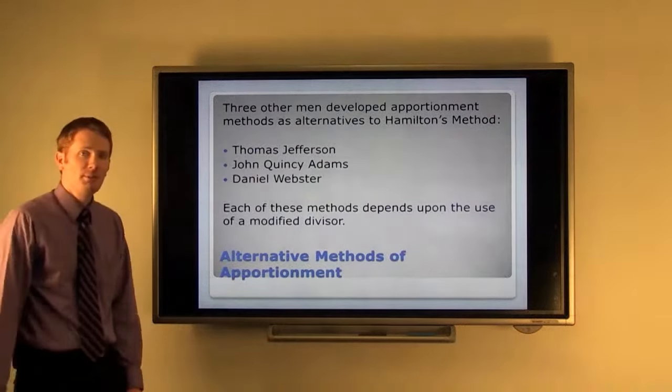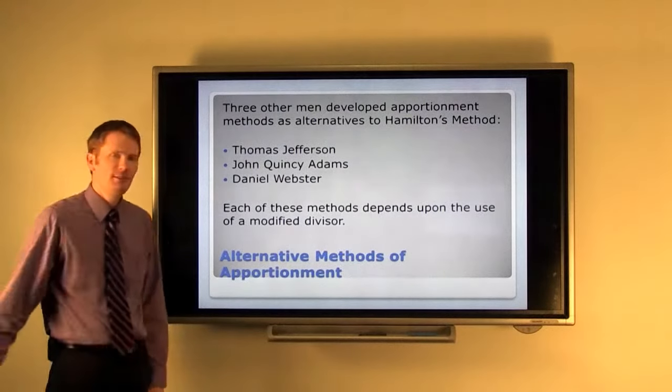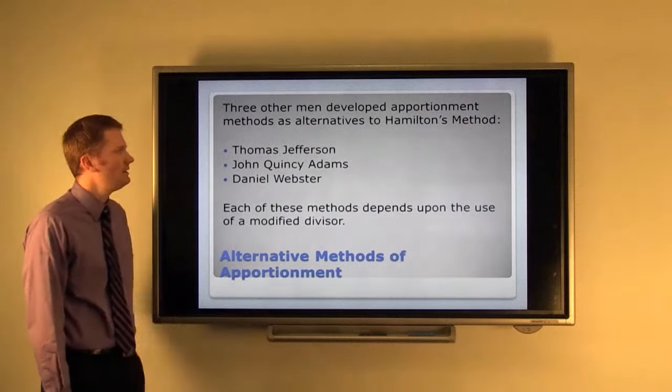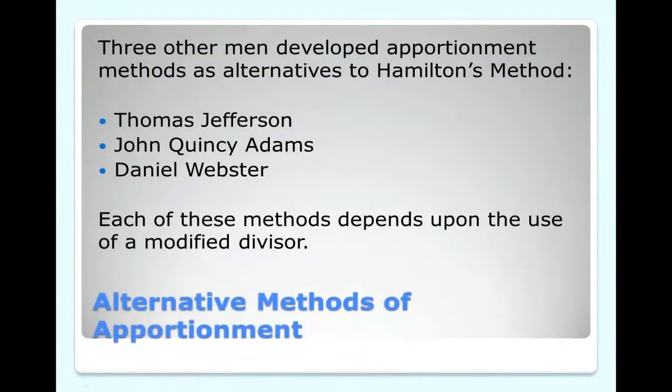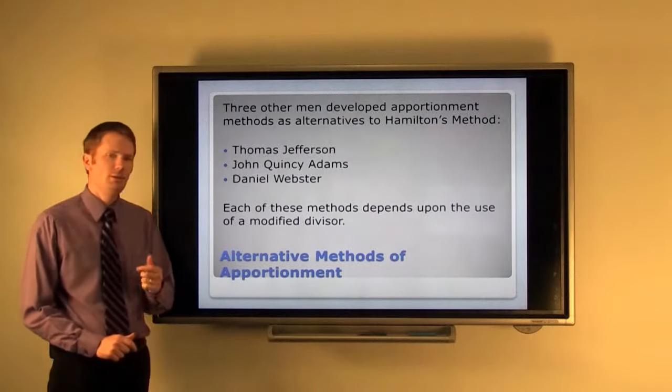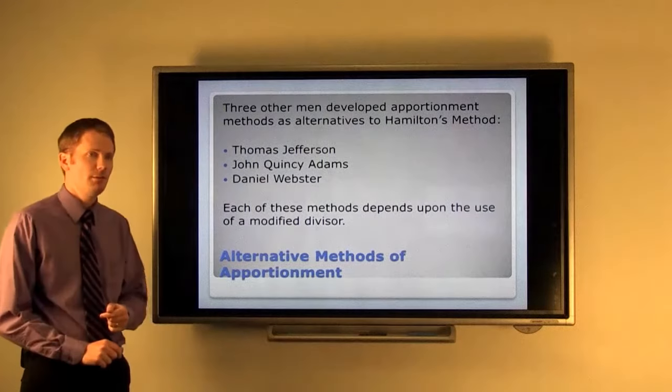So who were these men? Thomas Jefferson, John Quincy Adams and Daniel Webster were the three statesmen who proposed alternative methods to Hamilton's. And it turns out that every single one of these methods depends upon the use of a modified divisor.